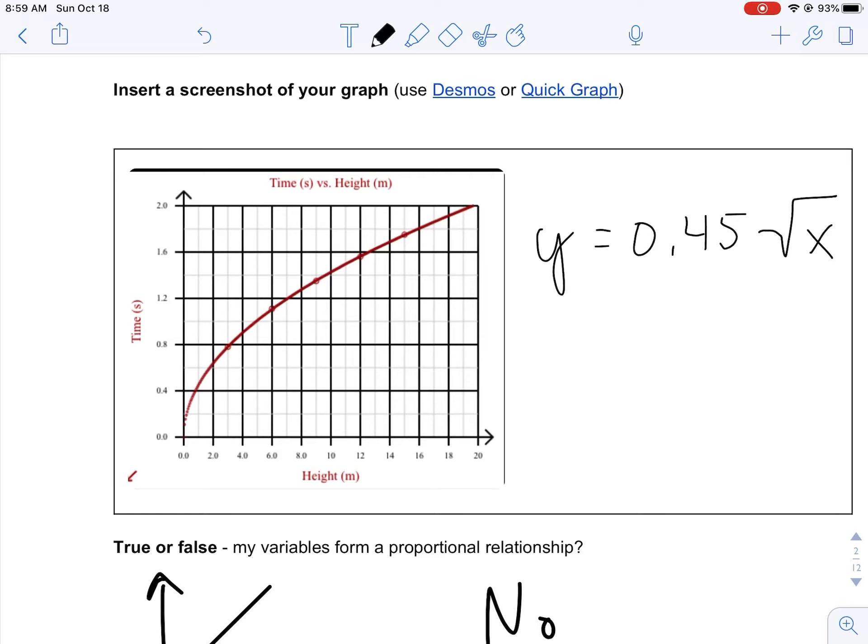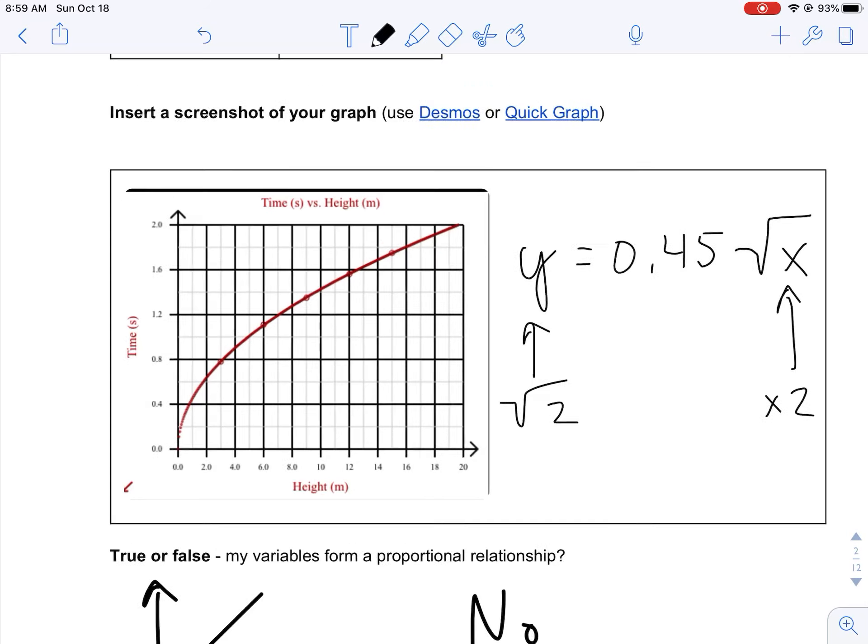It's a square root function, so what this means is when your input increases by a factor of two, your output only increases by a factor of square root of two. So when this value goes up times two, your y value goes up by a factor of square root of two. We can actually test it out.